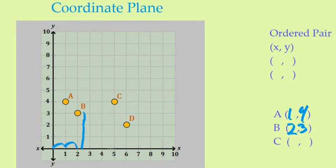Let's find one more. Let's find C. Now C is all the way over here at 5. It's 5 on which axis? The x-axis. So it's going to be 5 right here. And what y value does C have? We go up 1, 2, 3, 4. So it's going to have a value of 4 right there.